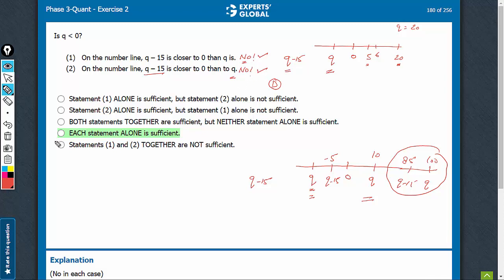D is the correct answer choice. Each statement is alone sufficient. Each statement tells us that no, q is not less than 0.